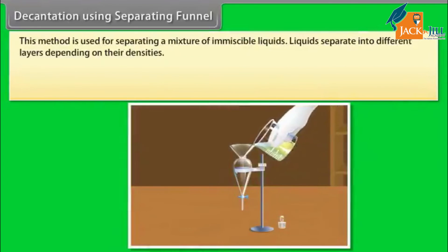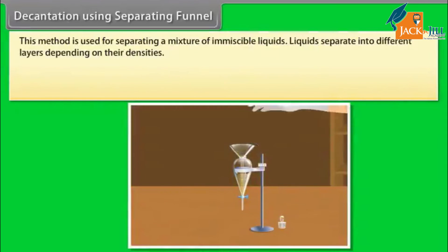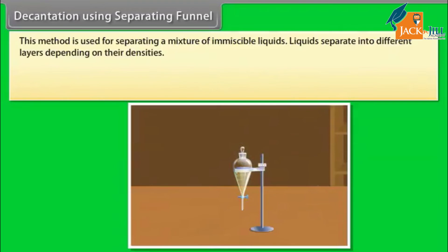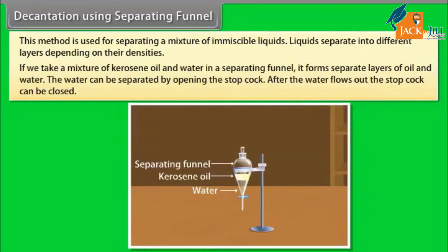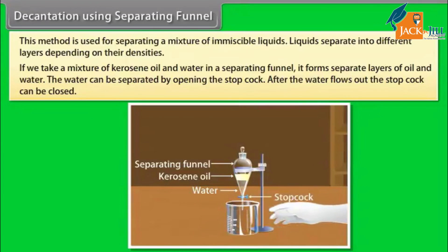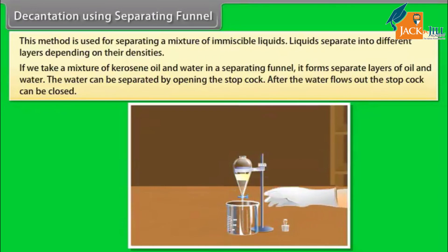Decantation using a separating funnel: This method is used for separating a mixture of immiscible liquids. Liquids separate into different layers depending on their densities. If we take a mixture of kerosene oil and water in a separating funnel, it forms separate layers of oil and water. The water can be separated by opening the stopcock; after the water flows out, the stopcock can be closed.